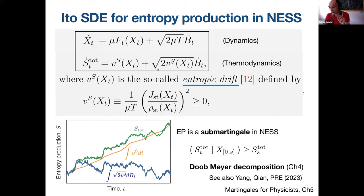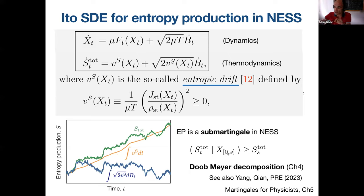This type of decomposition appears often in martingale theory — it is called the Doob-Meyer decomposition. From this equation, we can show that stochastic entropy production is a sub-martingale: whatever history we observe up to time s, the conditional expectation in the future is always greater than or equal to the value at time s. Whenever you have a sub-martingale, you can decompose it into an increasing function (the integral of the entropic drift times dt) and a martingale (an Itô integral with zero mean).